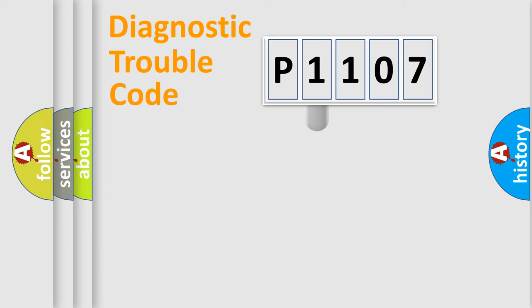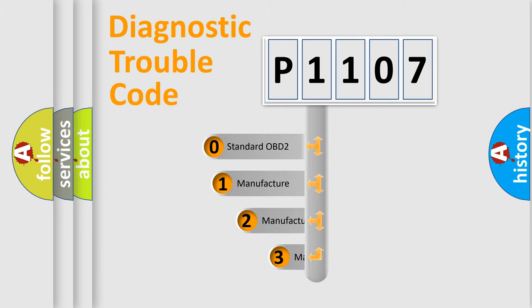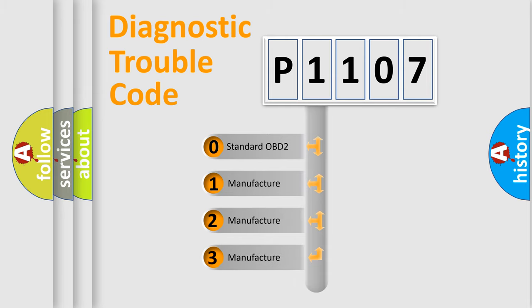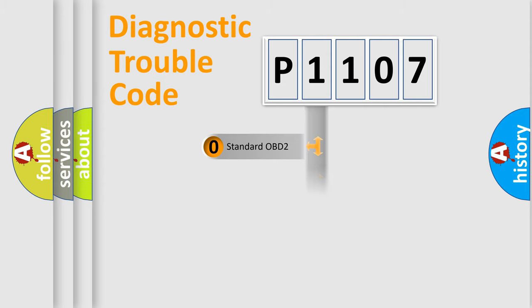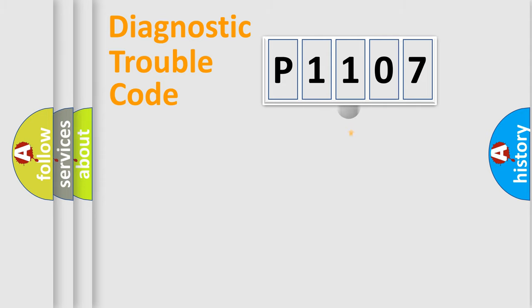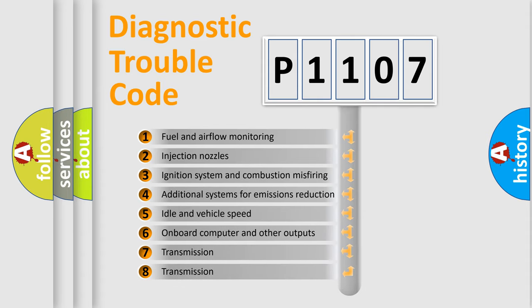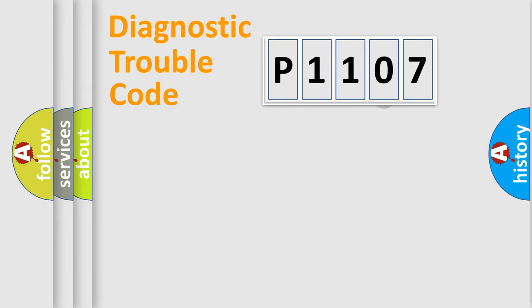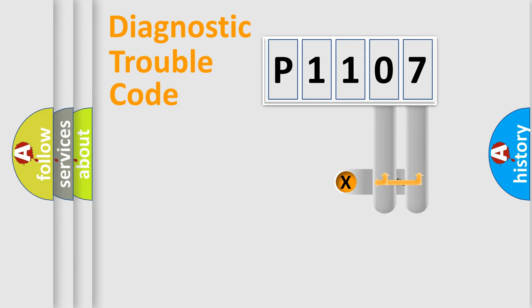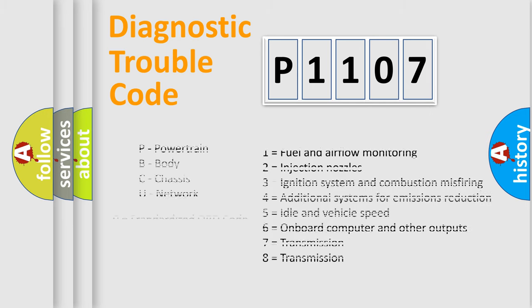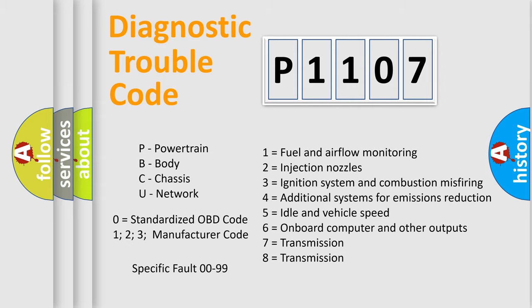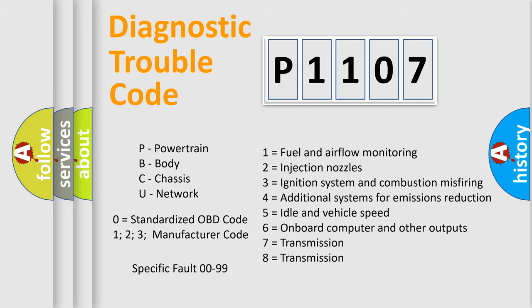This distribution is defined in the first character of the code. If the second character is expressed as zero, it is a standardized error. In the case of numbers 1, 2, or 3, it is a more specific expression of a car-specific error. The third character specifies a subset of errors. The distribution shown is valid only for the standardized DTC code, and only the last two characters define the specific fault of the group. Such a division is valid only if the second character code is expressed by the number zero.